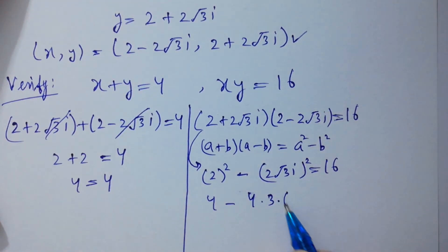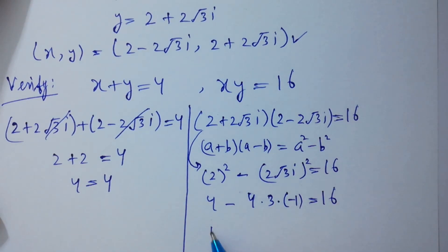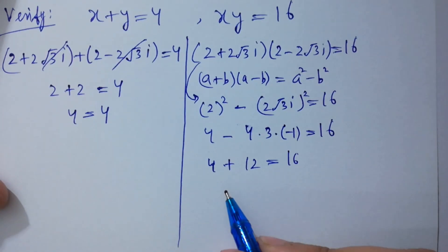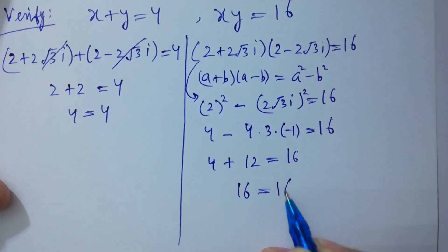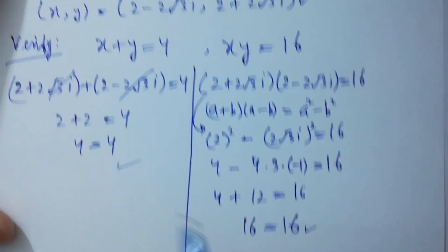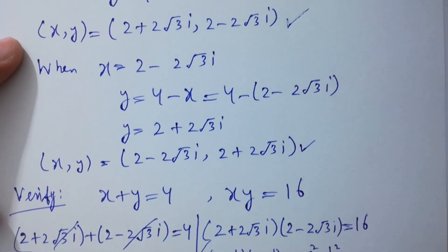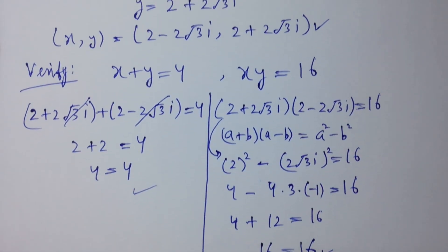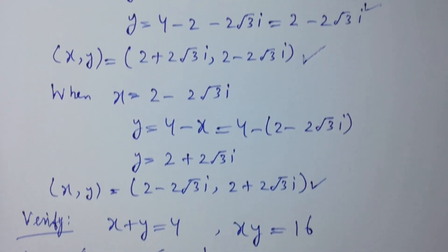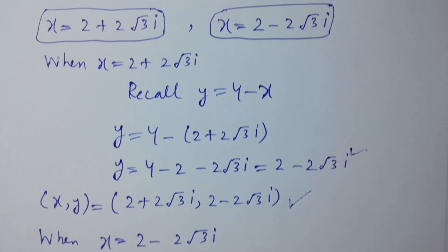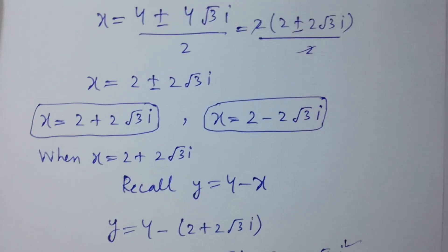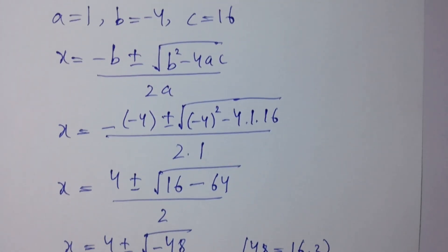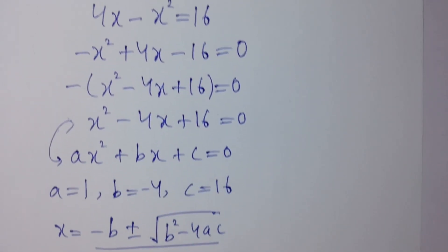So x times y equals 2 squared minus (2√3 i) squared, which is 4 minus 4 times 3 times i squared. Since i squared equals minus 1, we get 4 minus (minus 12), which equals 4 plus 12 equal to 16. This confirms the values of x and y are correct. Thanks for watching this video. Please subscribe to this channel to get notifications of new videos, and don't forget to share with your classmates and friends. Visit the playlist to learn more.